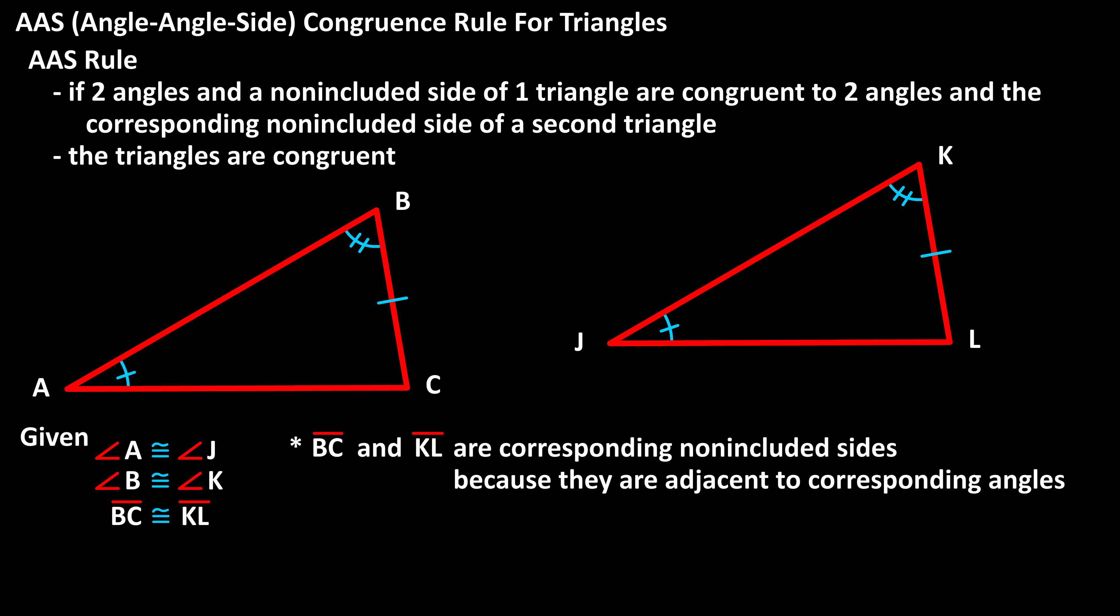Now, since we have two congruent angles and congruency of corresponding non-included sides, from the AAS congruency rule for triangles, we know that triangle ABC is congruent to triangle JKL.